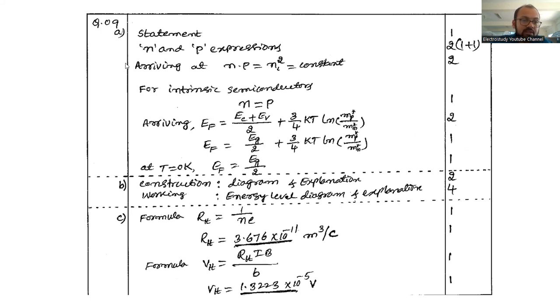Question number 9c, the formula is very simple. It's a standard formula which is available in all types of literature. R_H is equal to 1 by ne. So R_H is equal to 3.67 into 10 to the power minus 11 meter cube per coulomb. Then V_H you can calculate using formula: R_H into i_b divided by b. You will be getting V_H is equal to 1.3223 into 10 to the power minus 5 volt. This is very simple. If you understand the formula, 90 percent of the solution you will be getting. This is regarding questions related to Hall effect.